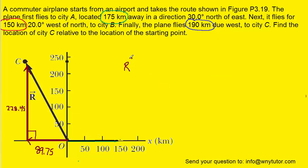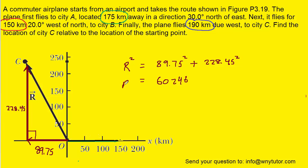Since they form a right triangle, we can use the Pythagorean theorem to calculate the magnitude of the resultant. The resultant squared — the hypotenuse — equals the X component squared plus the Y component squared. Simplifying the right side on a calculator gives approximately 60,246. Taking the square root of both sides, we get the magnitude of the resultant: approximately 245 kilometers.